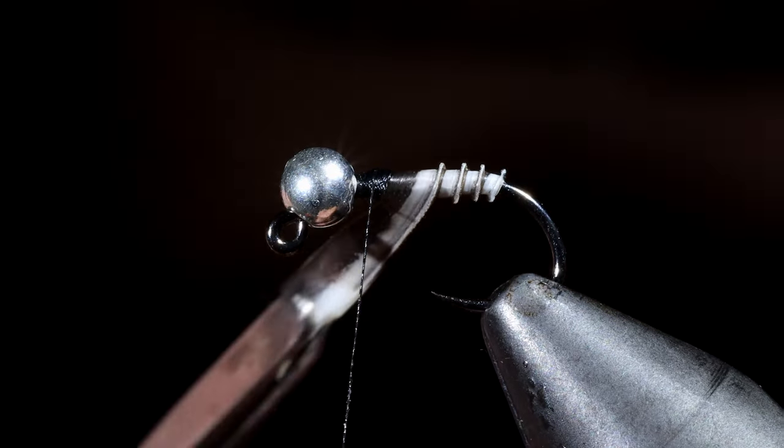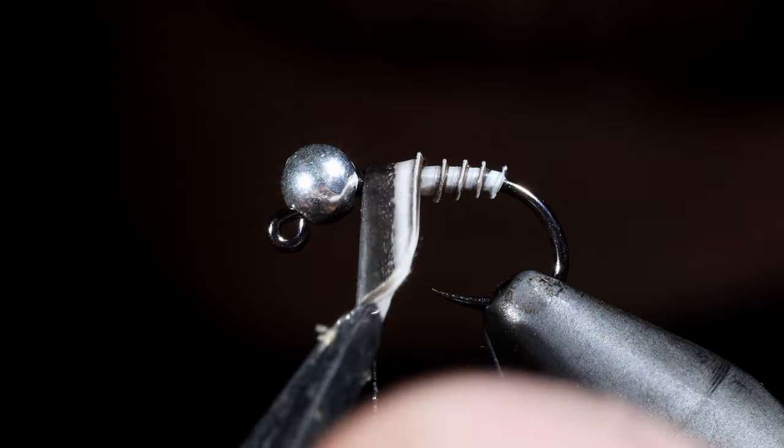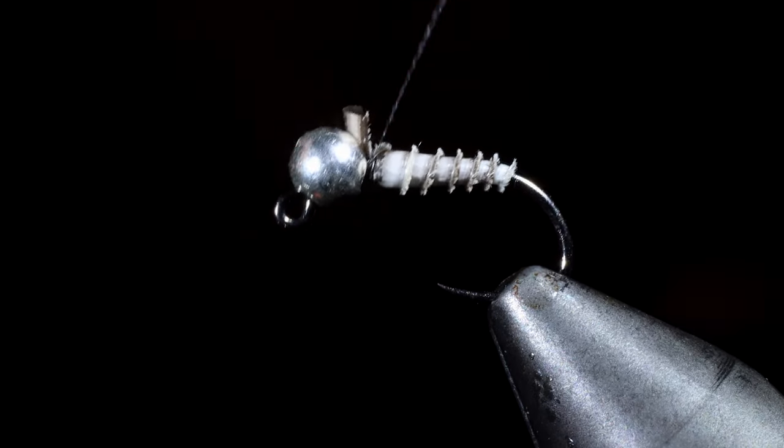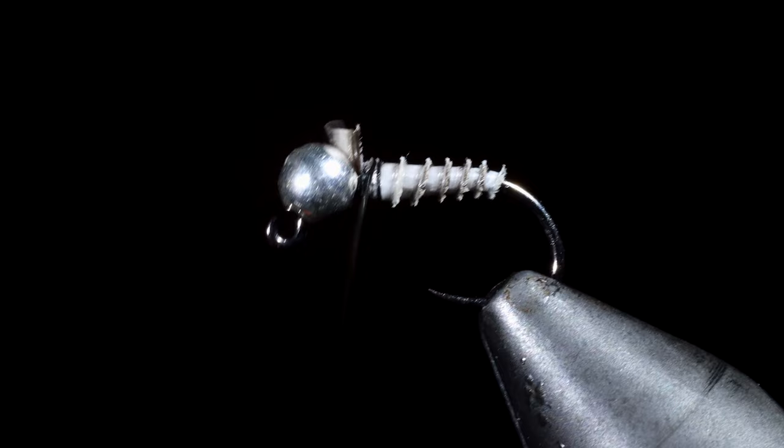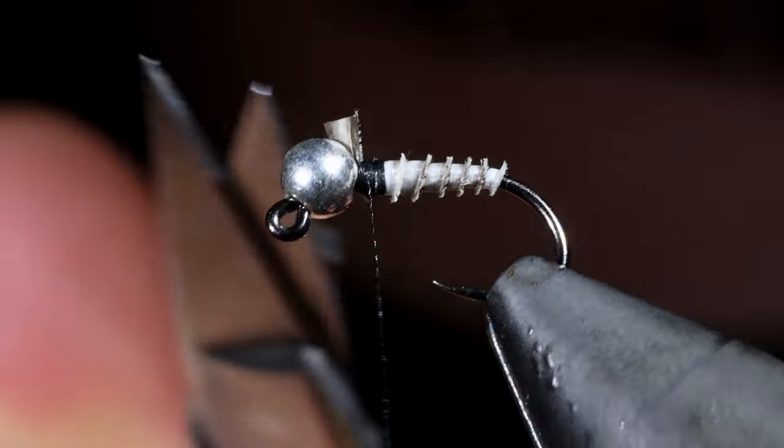Biots are an incredible natural material to work with because of their small fibers that give a 3D effect. Once we reach the head of the fly we'll secure it in place and snip the excess free.